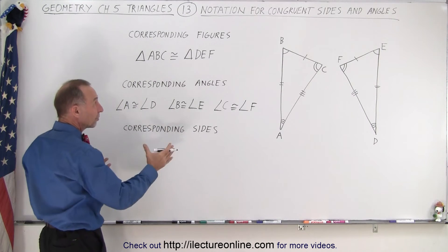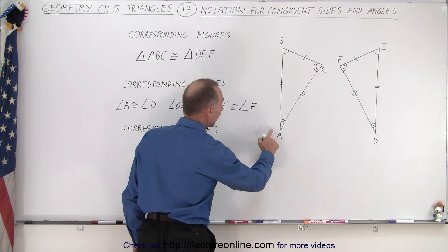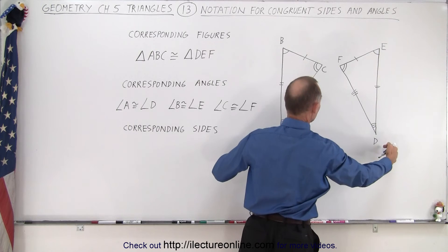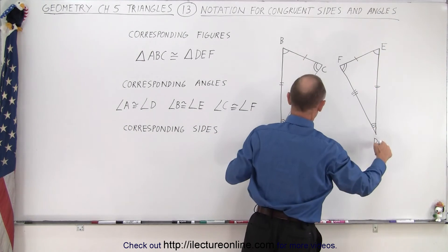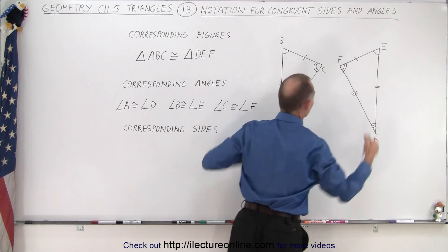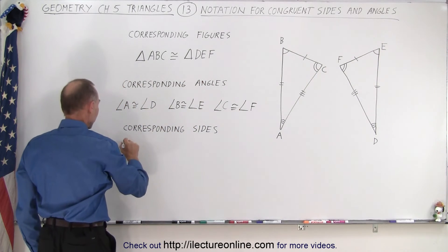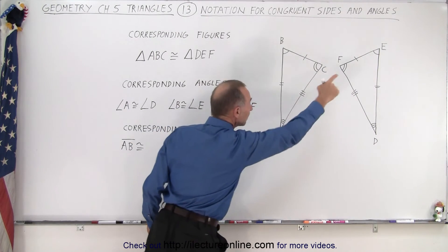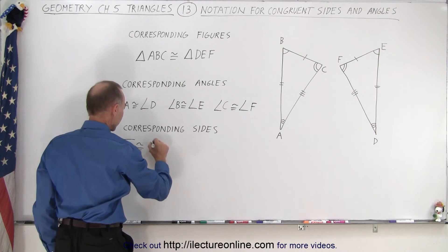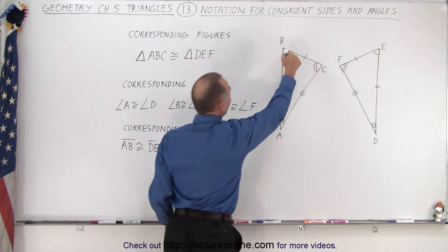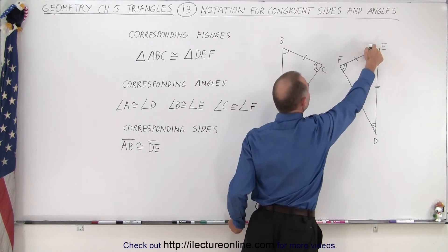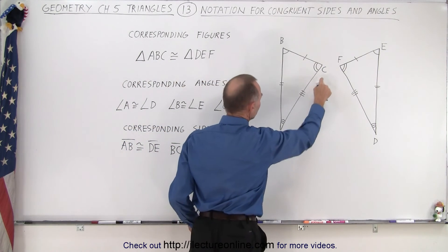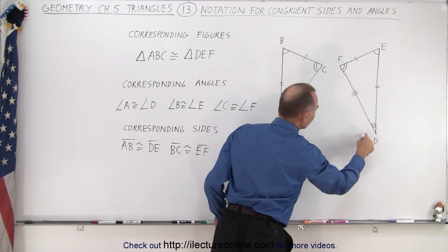For the corresponding sides we can do the same thing. Notice that we go from A to B, and for the same reason we go from D to E, because we want to move in the corresponding direction from angle A to angle D, to angle B to angle E. So we can write that side AB is congruent to side DE, that side BC is congruent to side EF, and finally from C to A must be congruent to from F to D.